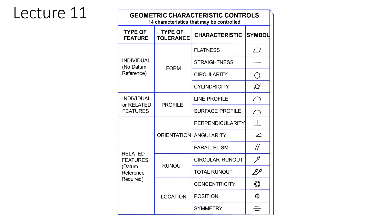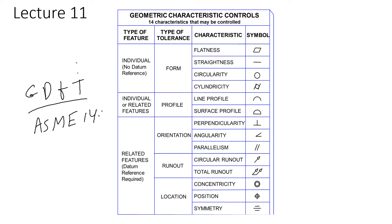Assalamu alaikum students, welcome to lecture number 11 of Engineering Drawing and Graphics. We are studying Geometric Dimensioning and Tolerancing (GD&T), specifically the ASME Y14.5 standard. We have already discussed form tolerance, profile tolerance, orientation, runout, and location tolerances. Today we will see some of them with examples — how we measure them and how they are important for part design.